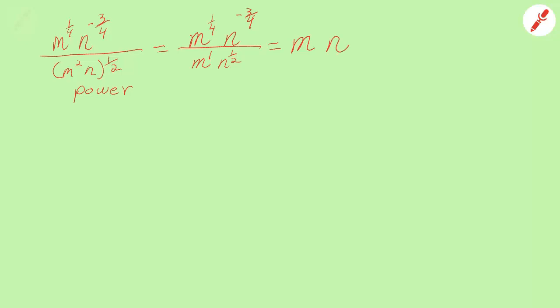Now the power on m is going to be one-fourth minus one and the power on n is going to be negative three-fourths minus one-half.